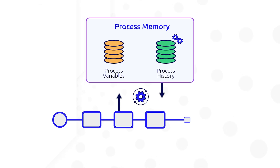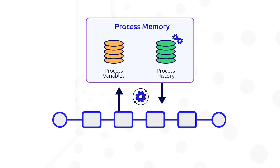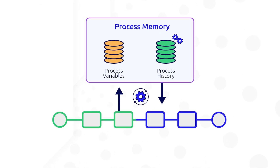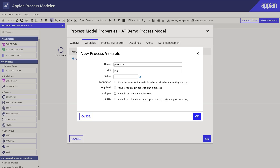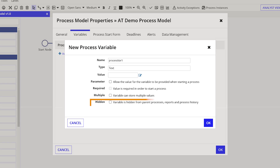Process variables store data in process memory throughout the life of the process. The more process variables you have, the larger the memory footprint. Marking process variables as hidden when configuring the process variable in process properties avoids them being added to the process history and can help reduce the memory footprint.